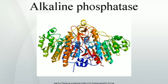Normal ALP levels in adults are approximately 20 to 140 IU/L, though levels are significantly higher in children and pregnant women. Blood tests should always be interpreted using the reference range from the laboratory that performed the test. High ALP levels can occur if the bile ducts are obstructed. ALP also increases if there is active bone formation occurring, as ALP is a by-product of osteoblast activity, such as in Paget's disease of bone.